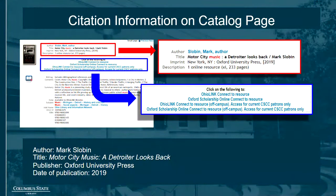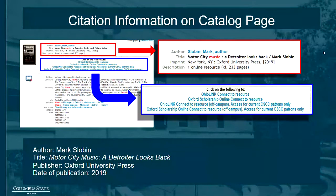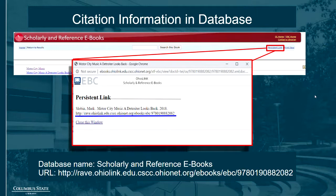When you look up an e-book in the Columbus State Library catalog, you'll see a page that gives you most of the publication information near the top. Here we can see that the author's name is Mark Slobin, the book's title is Motor City Music: A Detroiter Looks Back, the publishing company is Oxford University Press, and the date of publication is 2019. To find the database name and URL, click on one of the links that say Connect to Resource. This will bring you to the database page itself. In this case, the book is located in the database Scholarly and Reference e-books. Click on the link near the top that reads Persistent Link, and a pop-up window will give you the URL you can use to access the e-book directly. With all this information, we're able to use the format shown earlier to put together the full citation for an e-book found in a database.